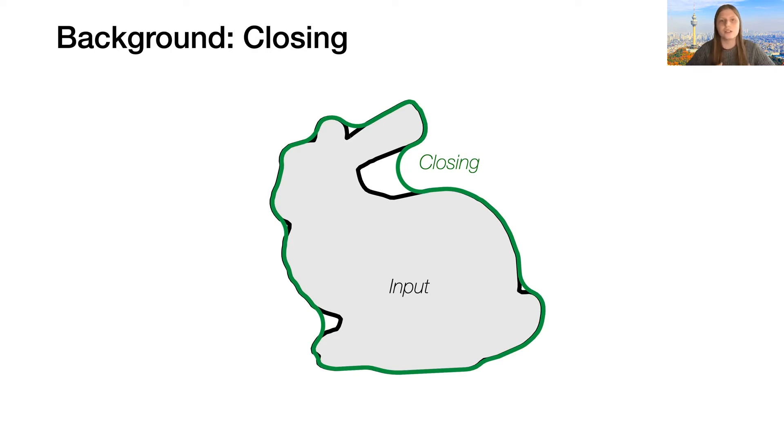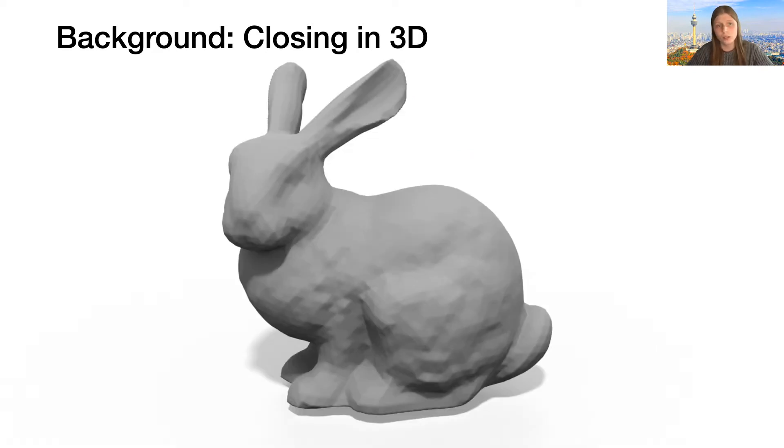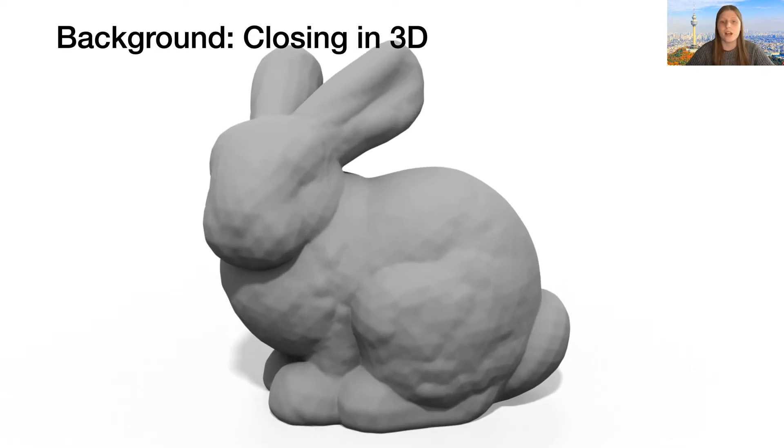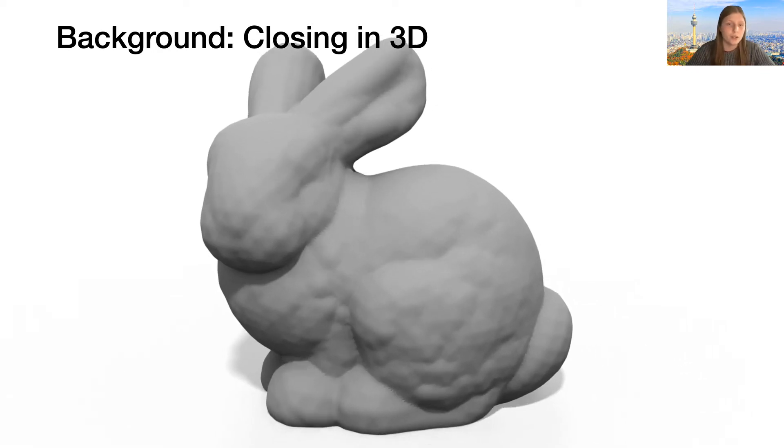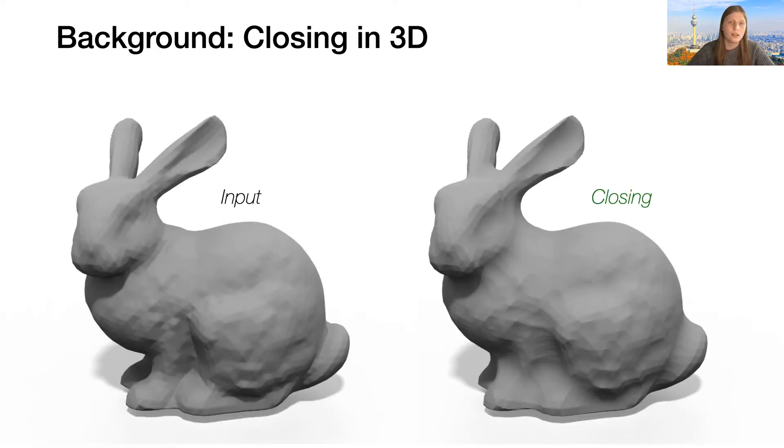In other words, the closing can be defined as all the region of space where a circle of a specific radius cannot be placed without intersecting the input. By the way, these operations translate to 3D. Once again, we can dilate a shape and then erode it to get the closing of a 3D surface, which is also the region of space where no sphere can fit without intersecting the input.